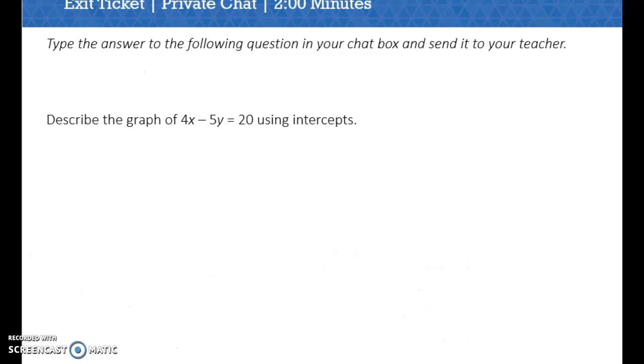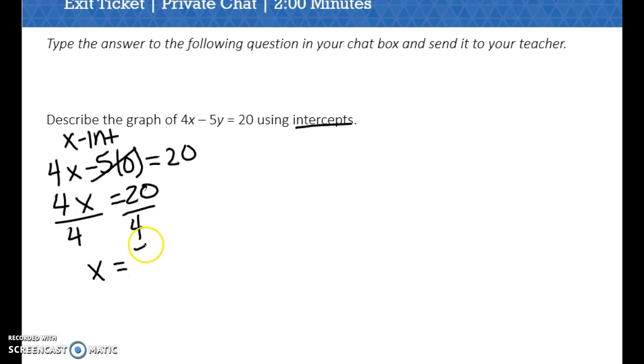The last problem we're going to look at is to describe this graph using intercepts. So let's find out what my intercepts are. To find my x-intercept, we plug 0 in for y. So this becomes 4x. Negative 5 times 0 is 0. So 4x equals 20. I can divide both sides by 4. So my x-intercept is 5. You can write this coordinate as 5, 0. The reason this y-value is 0 is because x is equal to 5 when y was 0.